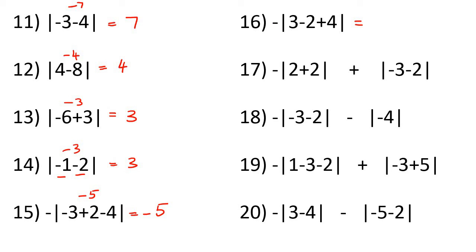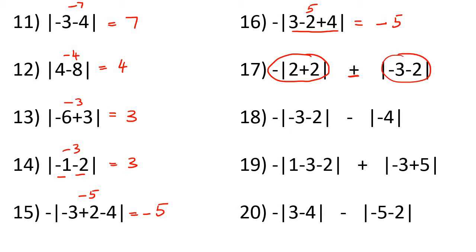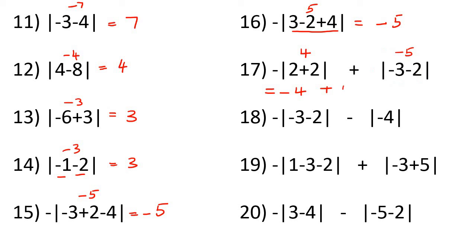Here we have a negative in the front, so we write it there. Then this part: 3 minus 2 is 1, and 1 plus 4 is 5, so the answer stays 5 but that negative was already there. Remember, the plus is not between two absolute values — it's just one absolute value plus another. So we have a negative, then 4 — the absolute value of 4 is just 4 — plus the absolute value of minus 5, which must be positive 5. So minus 4 plus 5 is 1.